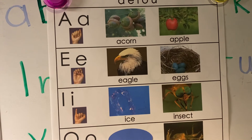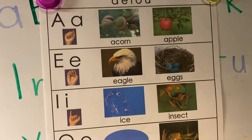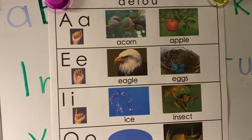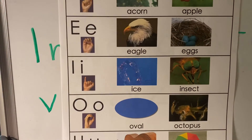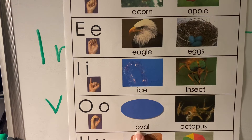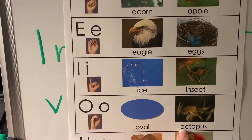Our next vowel is O. O can say its long sound, or say its own name, O, as in oval. Or it says its short sound, O, as in octopus.